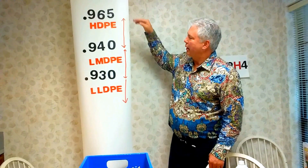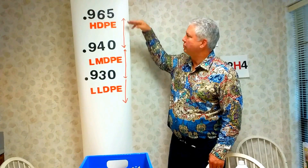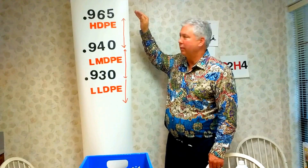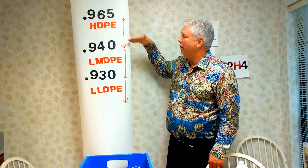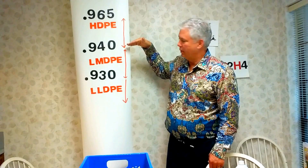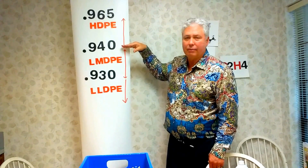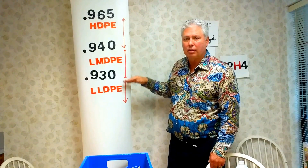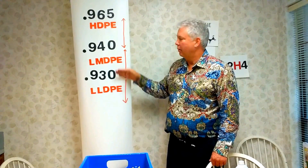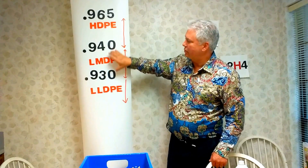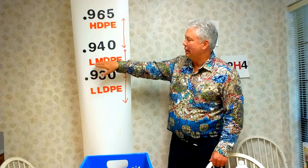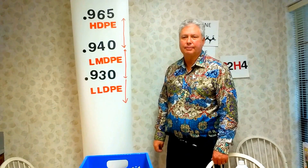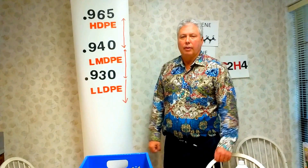Just basics here: anything from 940 to 965 grams per cubic centimeter — this is less than a density of one — is considered high density polyethylene. From 930 to 940 is called medium density. Below 930 is called linear low density. There are resins out there in an intermediate area called linear medium density polyethylene, as the name implies. That's the basics — if you have any questions, please give us a call.